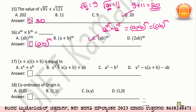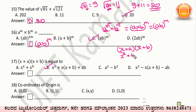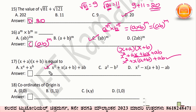17th question: (x+a)(x+b) equals what? We have to multiply this out. x into x gives x²; a into x gives ax; b into x gives bx; b into a gives ab. Taking x as a common factor: x² plus x(a+b) plus ab. Option B — x² + x(a+b) + ab — is the correct answer.